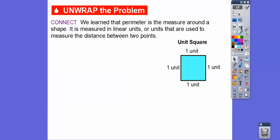We learned that perimeter is the measure around a shape, so it measures in linear units — units that are used to measure the distance between two points. So here the perimeter is 4, because it would be 1 plus 1 plus 1 plus 1 equals 4. Something like putting a fence around the outside — that would be perimeter.